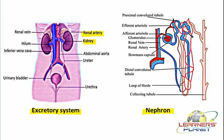The remaining filtrate is then transferred into the collecting tubule. The nephron — this functional unit of the kidney — is the masterpiece of the excretory system, because the urine formation occurs inside the nephron.